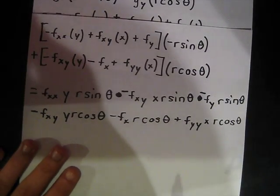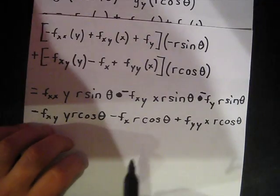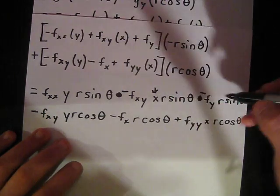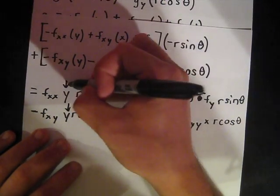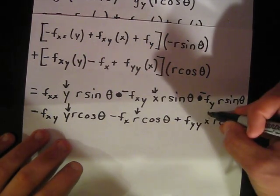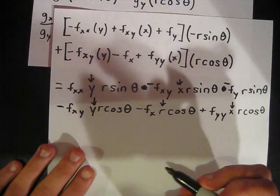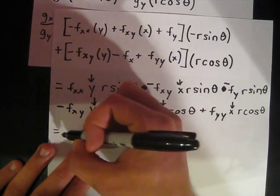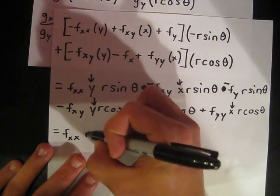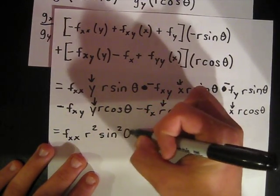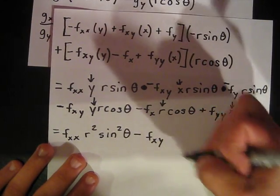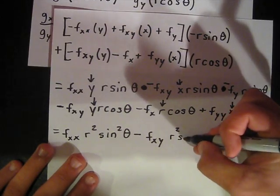Before finishing, we want to put everything in terms of r and theta. Anytime we see an x or y, we replace it with r cosine theta or r sine theta respectively. So for example, f sub xx times y times r sine theta becomes f sub xx times r squared sine squared theta, and f sub xy terms become f sub xy times r squared sine theta cosine theta.